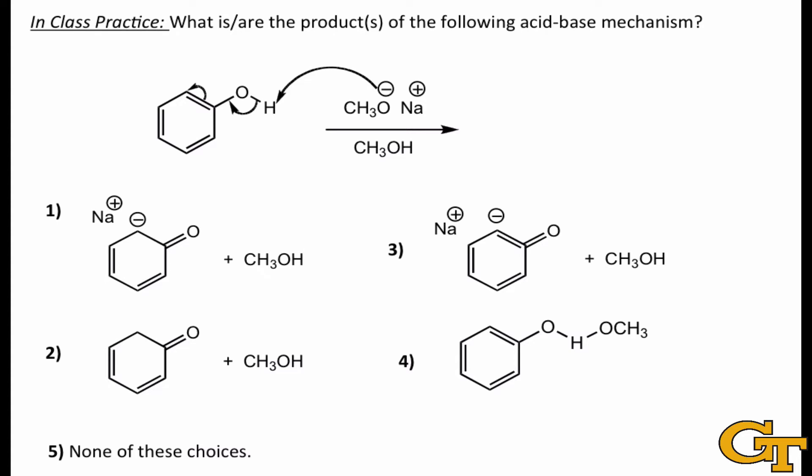So in the example we're looking at here, we're looking at an acid-base mechanism in which the base, which in this case is methoxide, is pulling a proton from the acid, which is phenol.